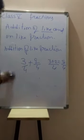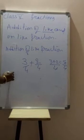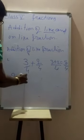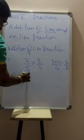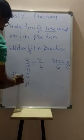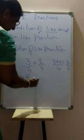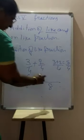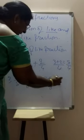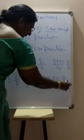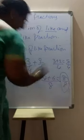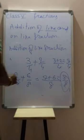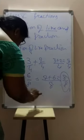Another example: 2 by 8 plus 6 by 8. You write the same denominator and add the numerators: 2 plus 6 equals 8 by 8. And 8 by 8 is equal to 1.